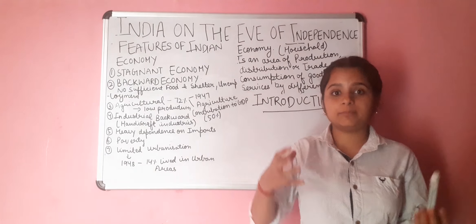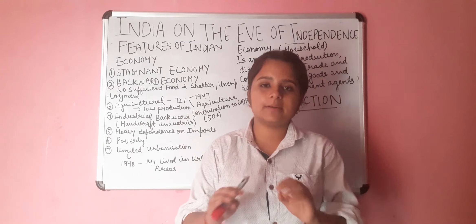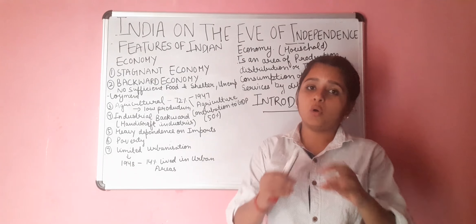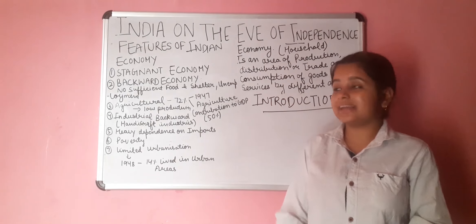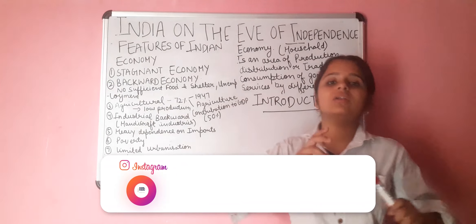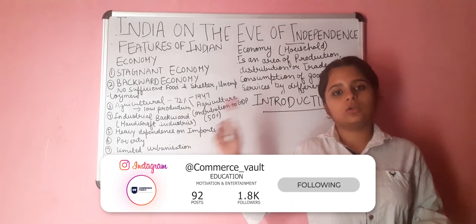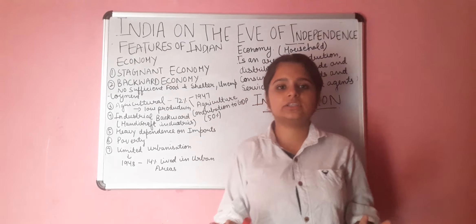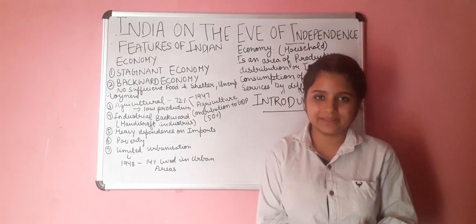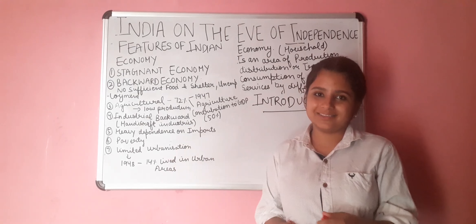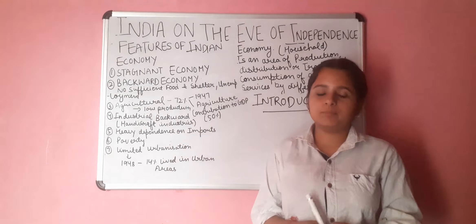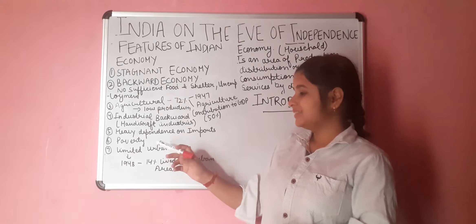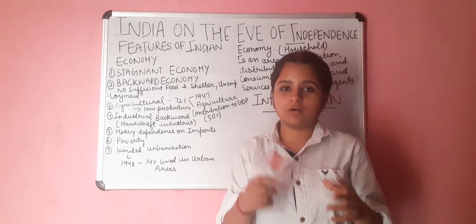Feature 6 is poverty. Everyone knows what poverty is — in simple words, it means being very poor. After 1947, there was a lot of poverty. Because all the factors we have discussed — stagnant economy, backward industry, agricultural dependence — all of these lead to poverty. At that time, our economy was in a very poor and worst condition, and because of that, poverty was rampant. The main reason for poverty was that the basic needs of people — roti, kapda, makaan (food, clothing, shelter) — were not being fulfilled.